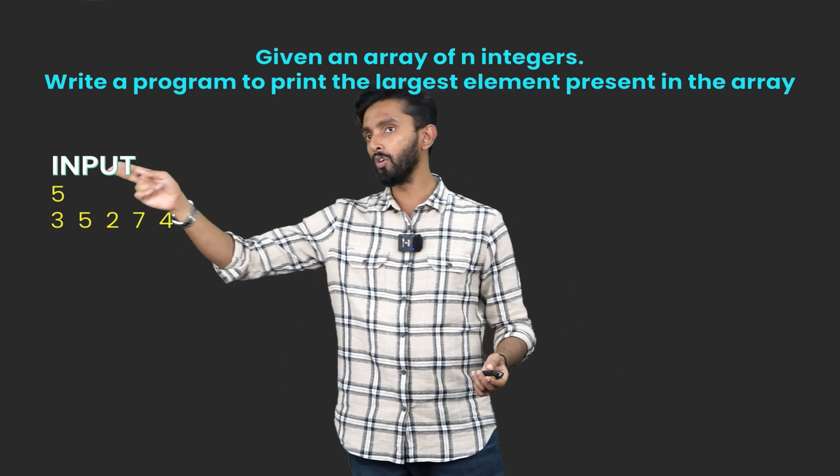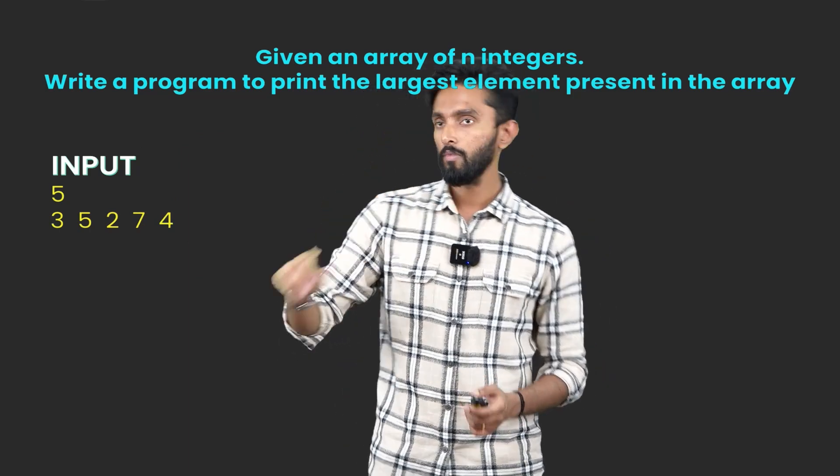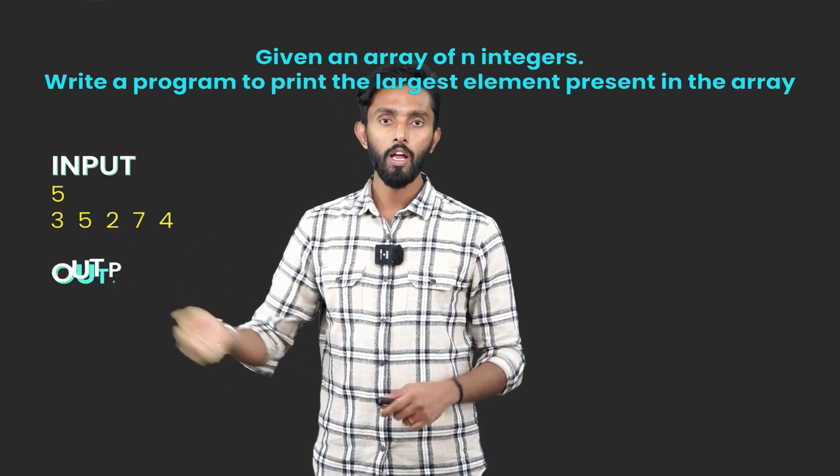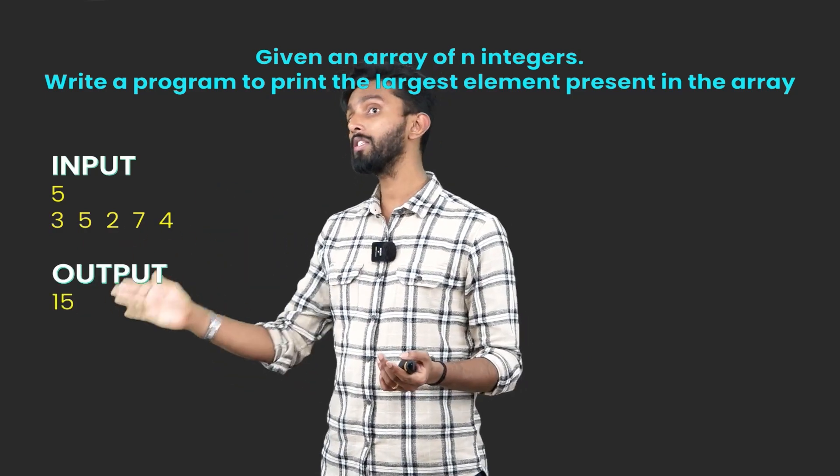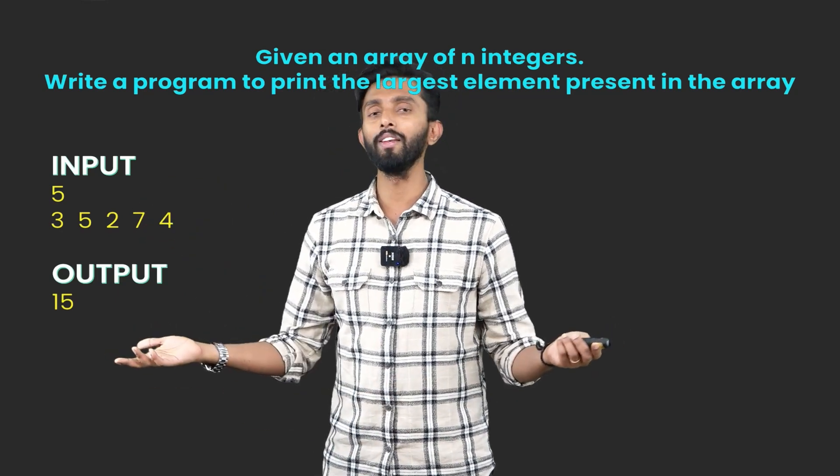Example, if input is 5, it means n value is 5. Now they will give you 5 numbers: 3, 5, 7, 2, 4. Output has to be 7. Why 7? Because the largest element here is 7. Now how do you find this?